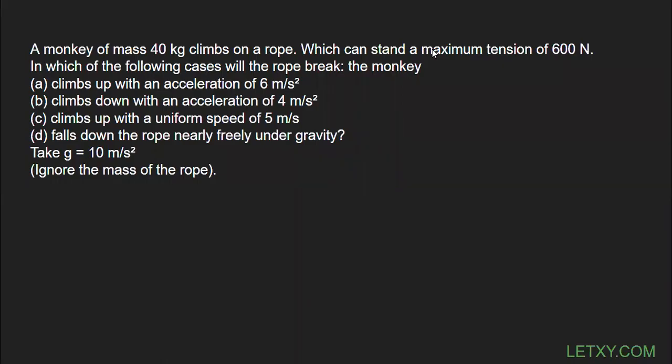Hello everyone. We are having another question: a monkey of mass 40 kg climbs on a rope which can withstand a maximum tension of 600 newton. It simply means if the tension in the rope becomes greater than 600 newton, the rope will break. We are given four parts — a, b, c, d — and we need to calculate the tension in each of them.